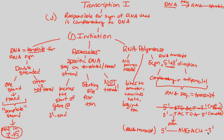We have a promoter region that wasn't transcribed, so no letters appear there. The final product is our RNA transcript — our mRNA — which will then continue through the next two processes of transcription: elongation and termination, which will be covered in the next video.